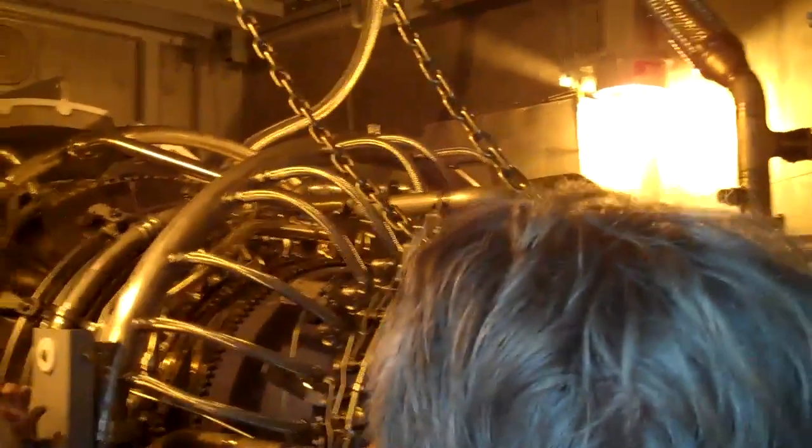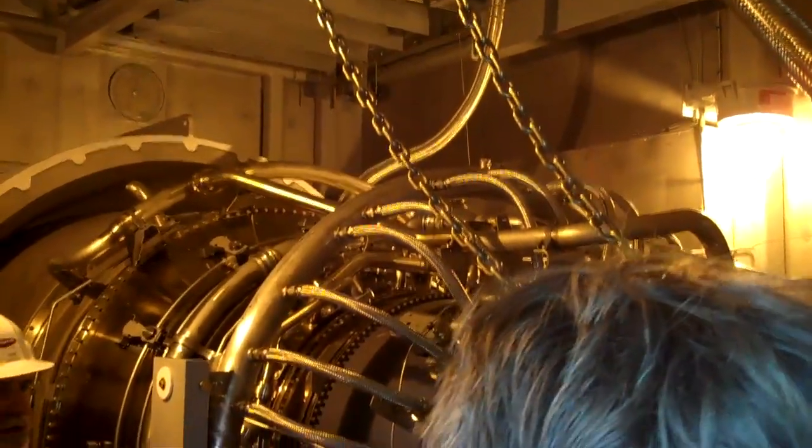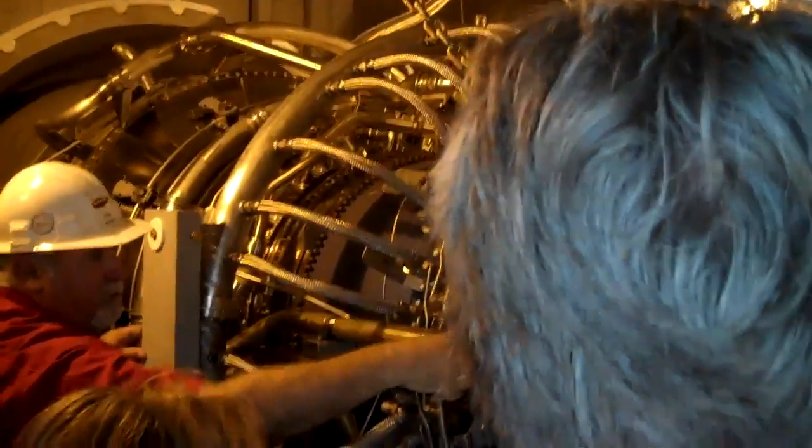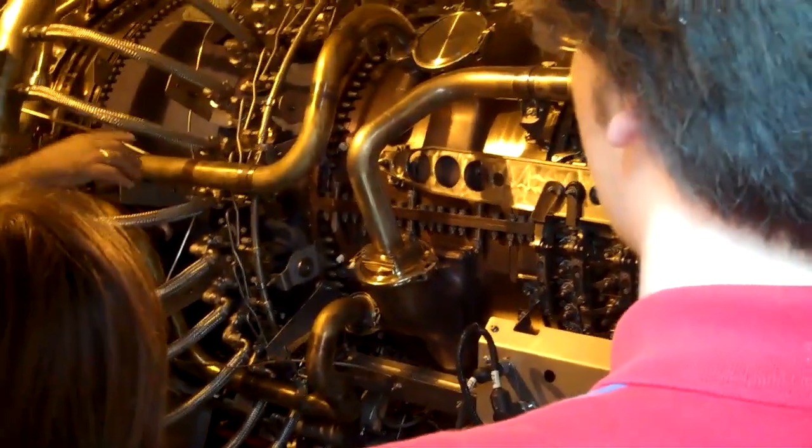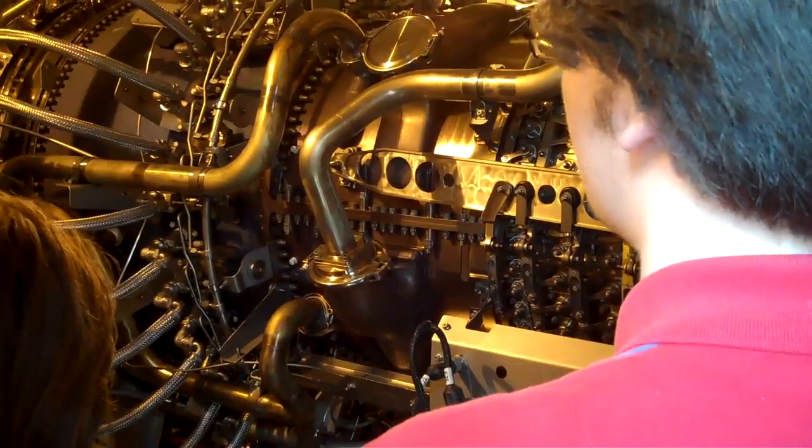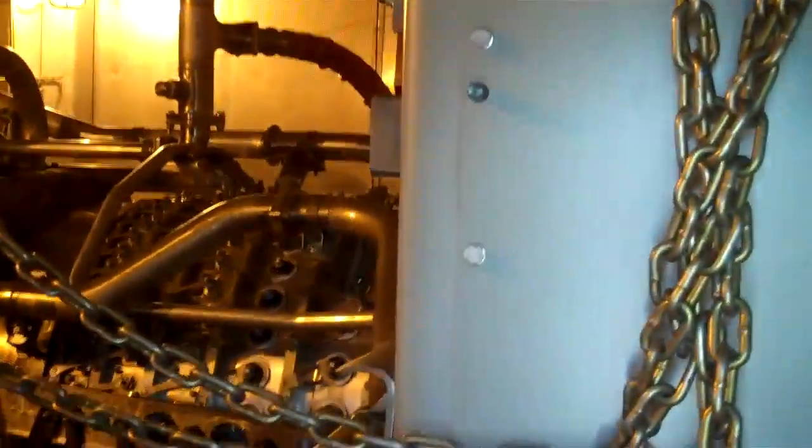Then there's a shaft over our shaft where this compressor, which is the high pressure compressor section, is driven by this turbine right here. This high pressure compressor and turbine shaft sits on top or around the other shaft, so they're independent.